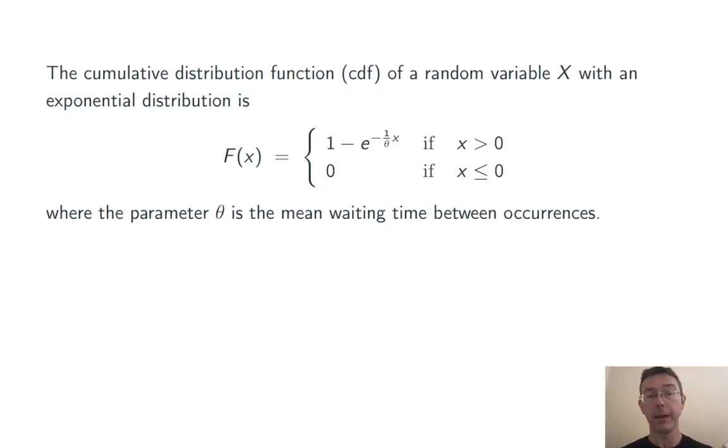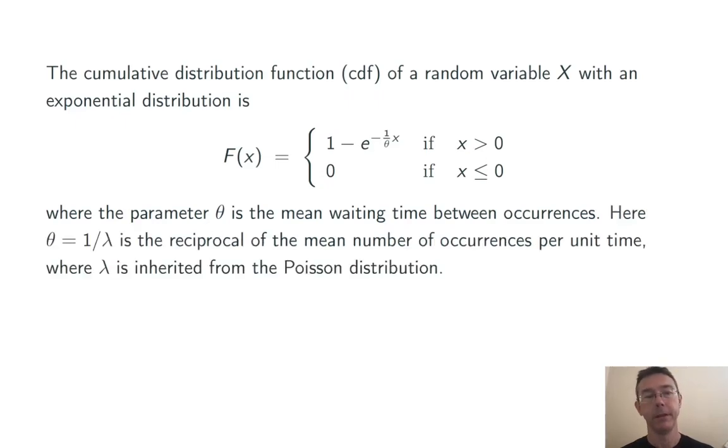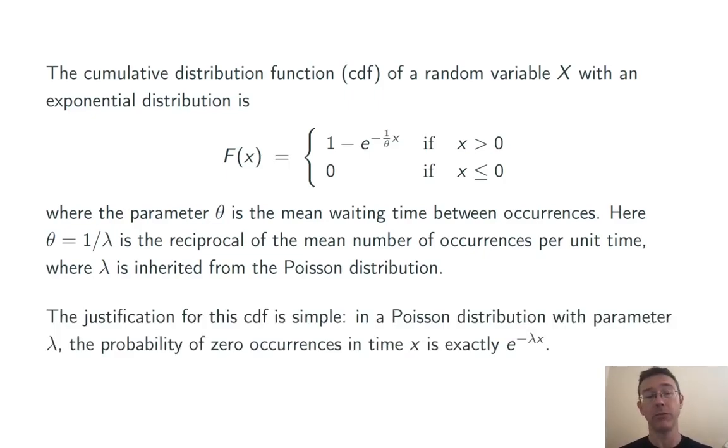We have a single parameter theta that's the mean waiting time between occurrences, and in a little bit will actually justify that statement and show that the expected value of such a random variable is actually theta. Here theta is equal to 1 over lambda, where lambda is the mean number of occurrences per unit time. And that's the lambda from the Poisson distribution, the Poisson process that this random variable is coming from. I have a whole vid on the Poisson distribution. I'll throw a link up top if you need a refresher.